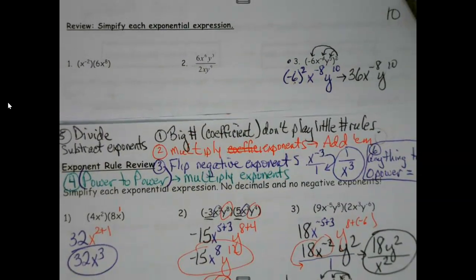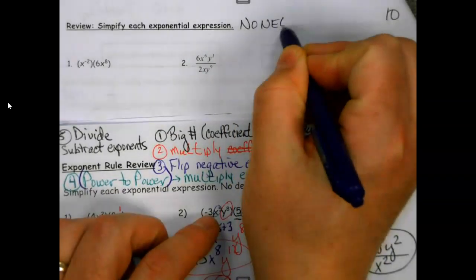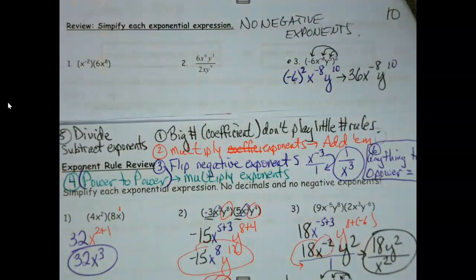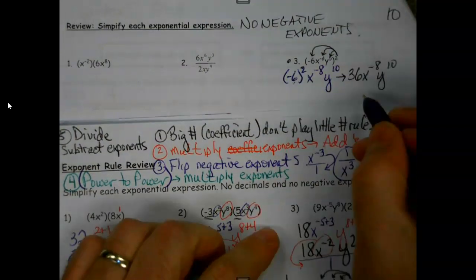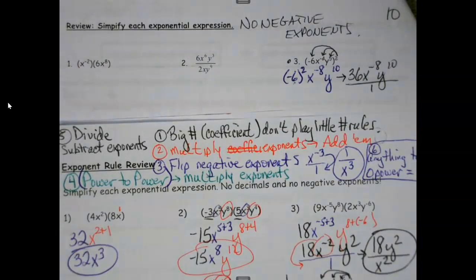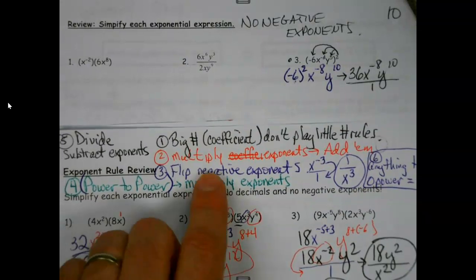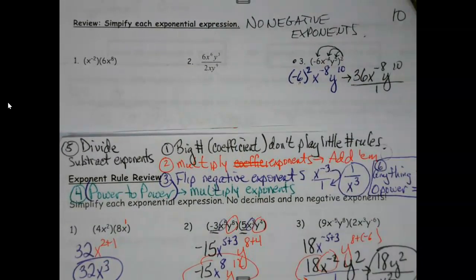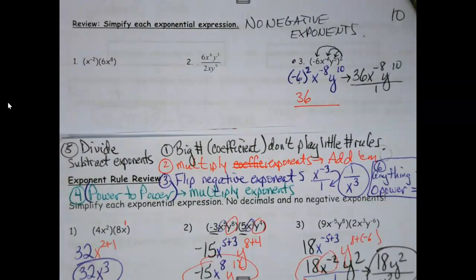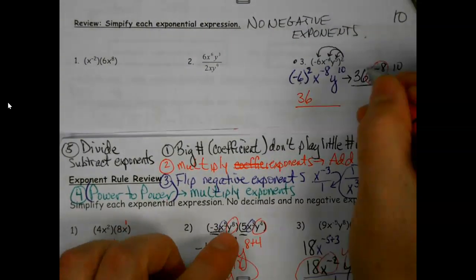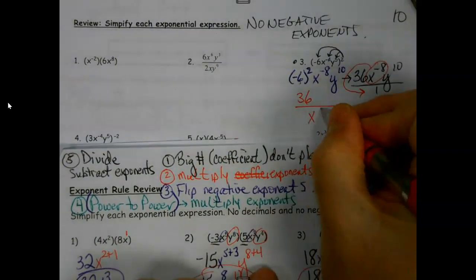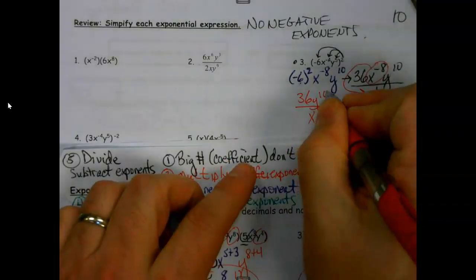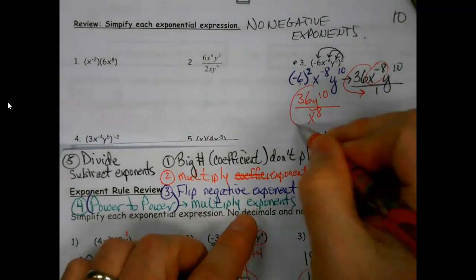There's one other thing — even though I didn't write it here, we hopefully remember this: you can't have negative exponents in answers. Mathematicians don't like it. So if you get to the end and you see a negative exponent, we're going to make this a fraction — anything with a negative exponent needs to flip. If something doesn't have a negative exponent, like 36, leave it alone — it's positive, it's behaving. But x to the negative eighth is not doing what it's supposed to, so we're going to give it a new home down in the denominator where it's going to feel more positive.